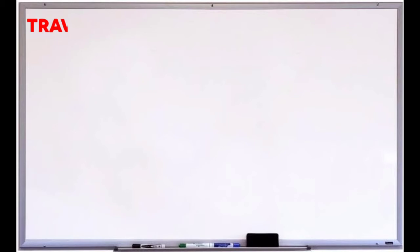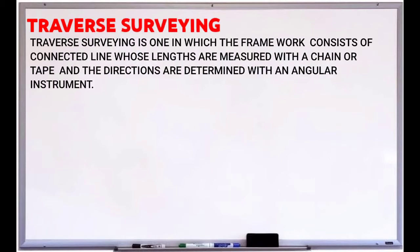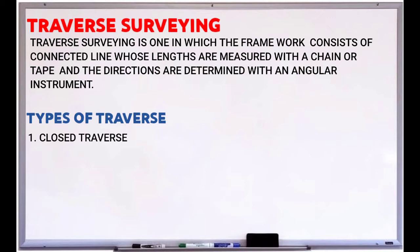Let's discuss first traverse surveying. Traverse surveying is one in which the framework consists of connected lines whose lengths are measured with a chain or tape, and the directions are determined with an angular instrument. There are two types of traverse: first is closed traverse, and second is open traverse.